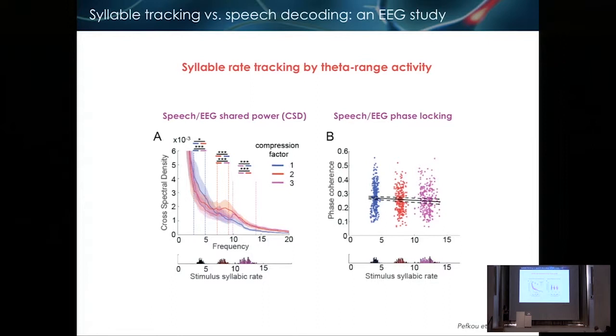And we got similar results. So we thought that we can go on with the behavior we have during the EEG experiment. So first, we wanted to have a notion of syllable rate tracking by the theta range activity. And here, we used two approaches. So in both cases, it's speech EEG cross-correlation, the basic notion, either with shared power or with phase locking. So here, what you see is that, so this is compression by one, two and three. So the blue line here is above the two others. Here, the red line is above the two others. And here, the purple line is above the two others. Meaning that we see some displacement of the theta rhythm to track the syllable rhythm.